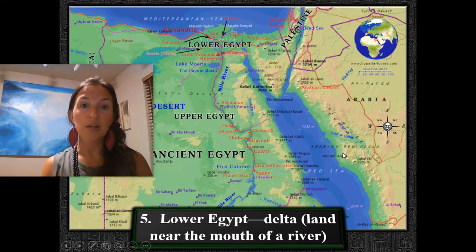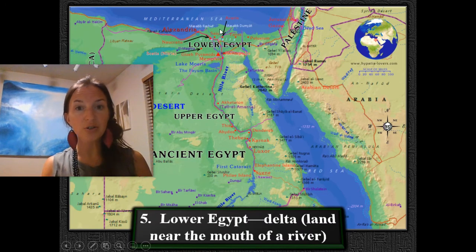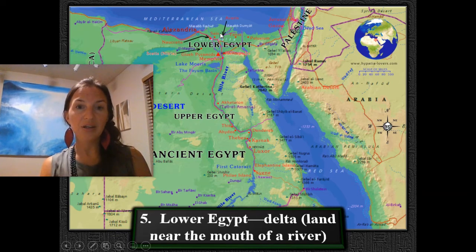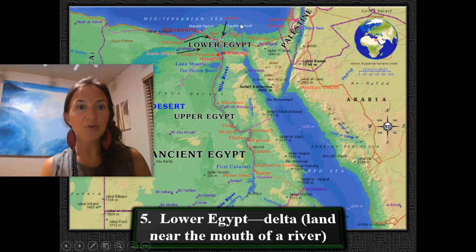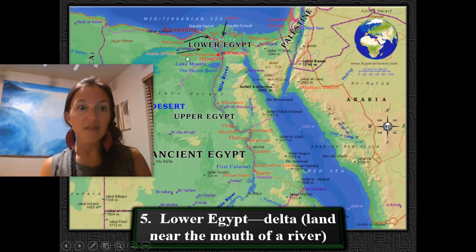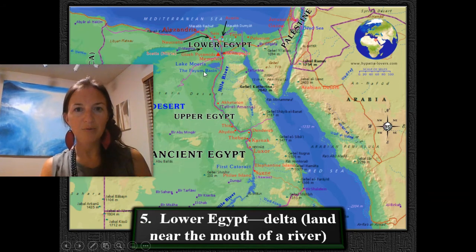The fifth note to write down is that Lower Egypt was considered from the delta, which is where the river fanned out in a triangle shape. That triangle-shaped delta flowed out into the Mediterranean Sea, and that was the region of Lower Egypt. We have the pyramids there and Memphis there.